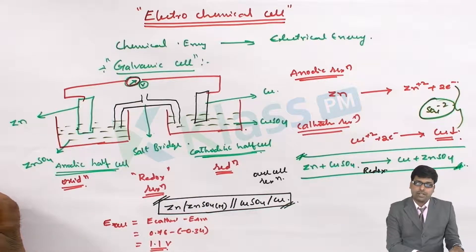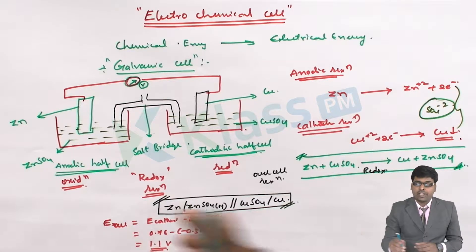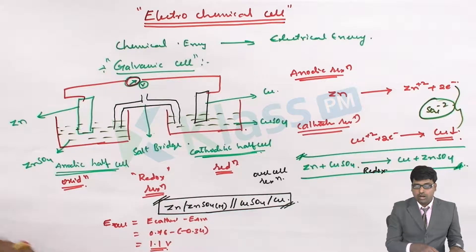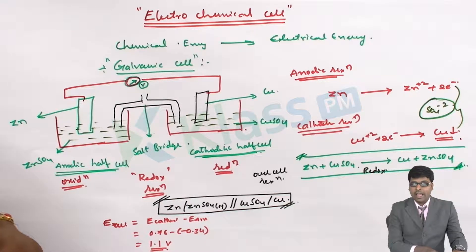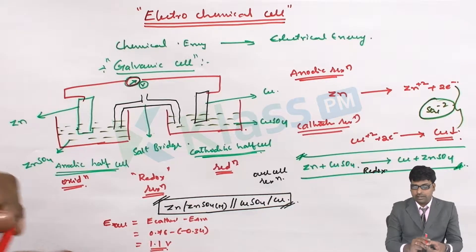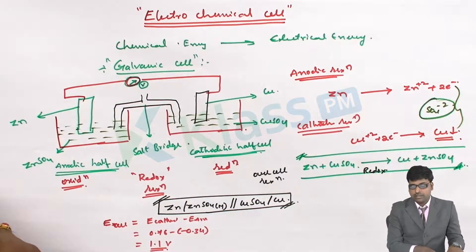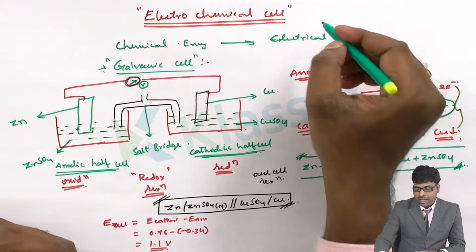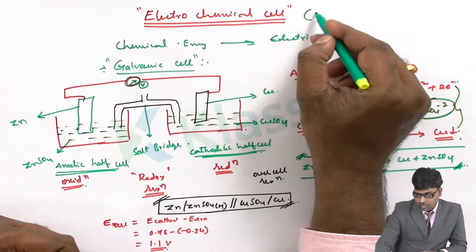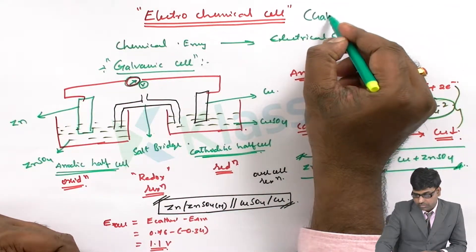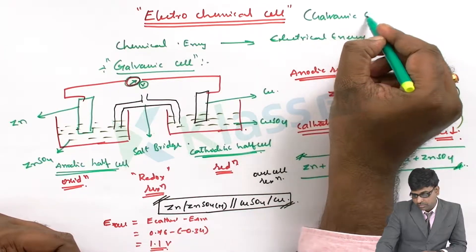So this is the electrochemical cell, which can also be called the galvanic cell.